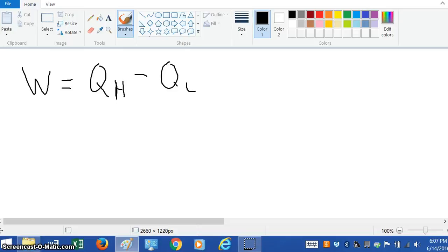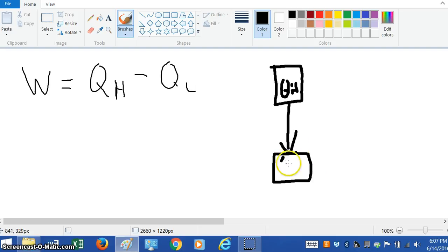So work W is equal to the difference in temperature between the high temperature and the low temperature. If you look in the textbook, it has some source of high temperature heat and that will naturally flow to some low temperature heat. So Q low. This is the way nature works just by itself.